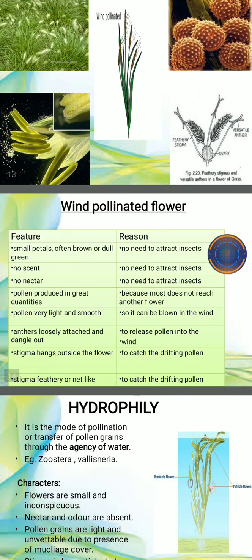Regarding the features of the flower petals: petals are small, often brown or dull green, because the basic character of colored petals is to attract insects, but in wind pollination no insect is required, so the petals are dull. No scent is produced and no nectar is produced. Pollen grains are produced in large quantity because most do not reach another flower, so they are produced in large numbers.